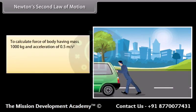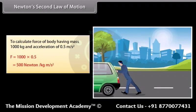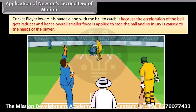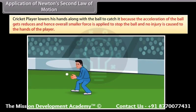To calculate the force of a body having mass 1,000 kg and acceleration of 0.5 meter per second squared: F equals 1,000 times 0.5, which equals 500 Newtons. Application: a cricket player lowers his hands along with the ball to catch it because the acceleration of the ball gets reduced, and hence a smaller overall force is applied to stop the ball, causing no injuries to the hands of the player.